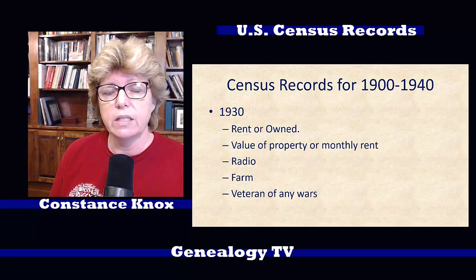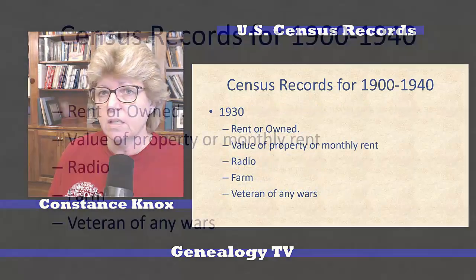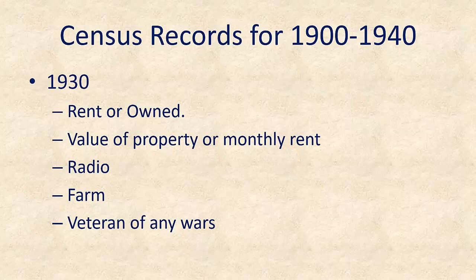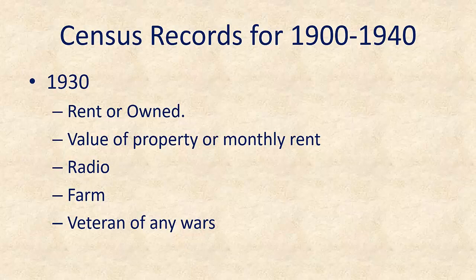Moving on to the 1930 census, they added information about whether they rent or own their home, the property value or the monthly rent, whether they had a radio in the house, whether they're on a farm or not, and whether they're a veteran of any wars. That's some of the key information that you can find in the 1930 census.